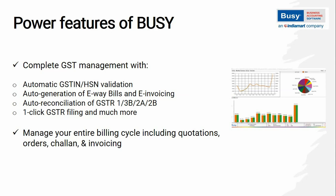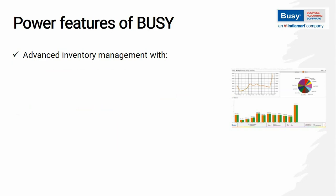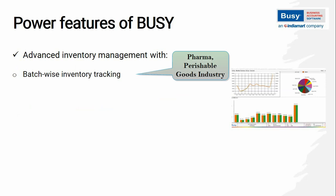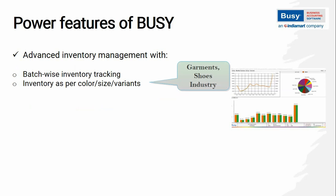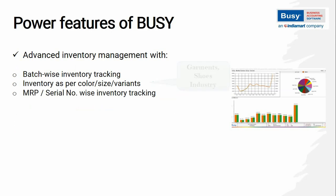Along with this, user can manage its billing cycle through quotation, order, chalan and then invoicing. In Bizi, user can manage advanced inventory also. For example, for pharma and perishable goods industry, batch with expiry date tracking feature is useful. For garments and shoe industry, tracking of items by its variants such as size, color, etc. can be done.